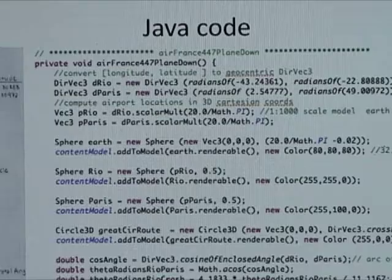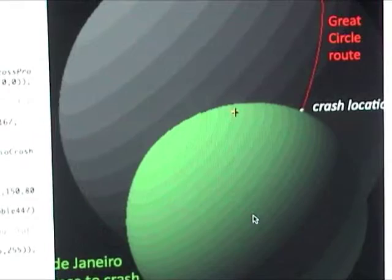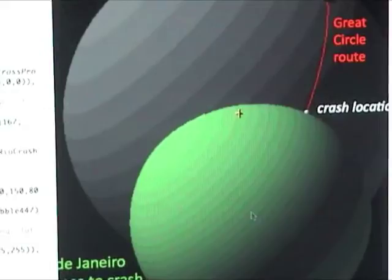So if we go over and look at the graphics, there's an example. There's the mini-sphere for Paris. The one for Rio is concealed inside the sphere. I'll explain why in a little bit.